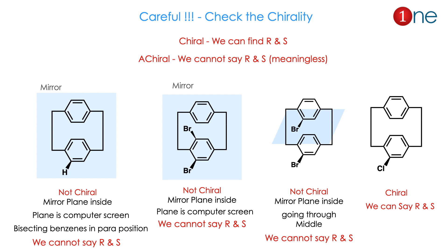Before finding R and S, we must carefully check chirality. If the compound is achiral, we cannot assign R and S — it is meaningless. The first example compound has two benzene rings connected via covalent bonds; a mirror plane passes exactly through the para portion of each benzene, so it is not chiral and we cannot assign R and S. The second compound with bromine is similar — the mirror plane through the para position reflects the bromine, so it is also not chiral. The third compound also has a perpendicular plane reflecting both benzene rings and the bromine nicely — also not chiral. Only when the attachment is in the benzene ring at the ortho position is the compound chiral, allowing R and S assignment.